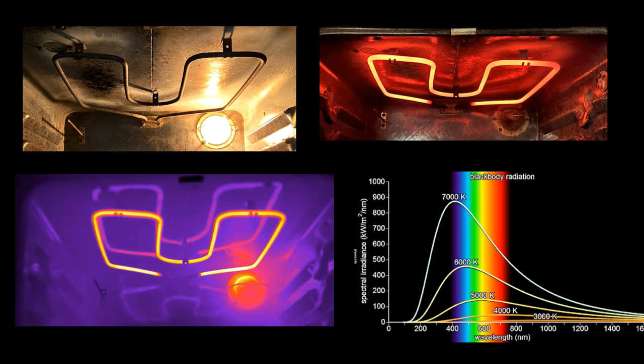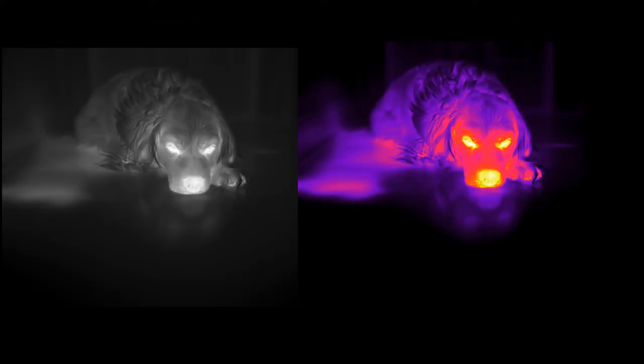Most of the time, the stuff we see around us gives off light in a region we can't detect — it's in the infrared region. This is what the camera does: it detects those lower-temperature wavelengths and displays them. But then we have a problem, because we can't see infrared wavelengths, so we have to make a translation to what we call false colors.